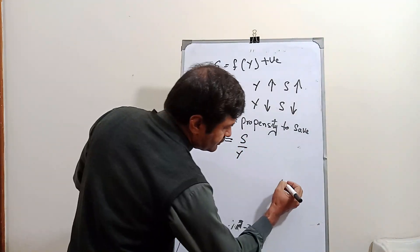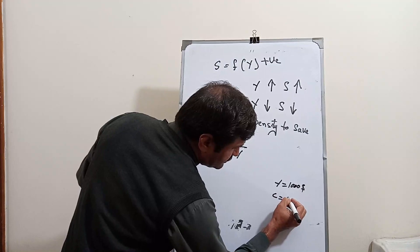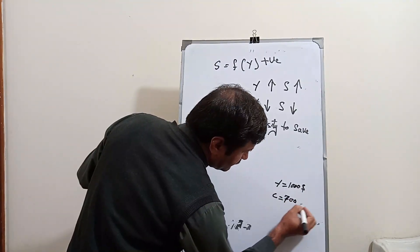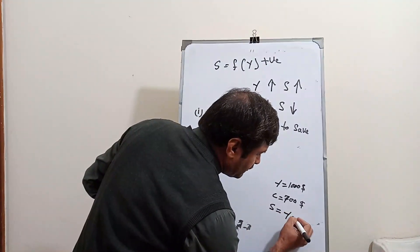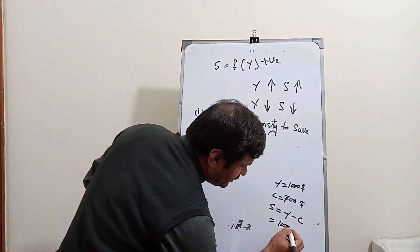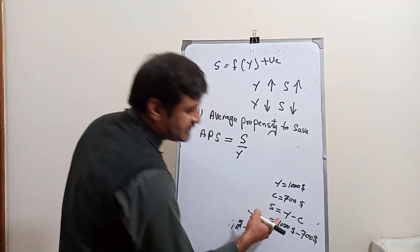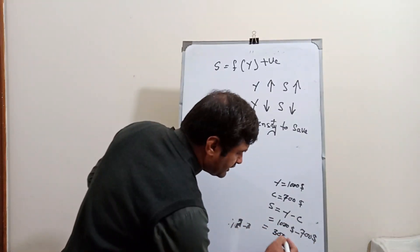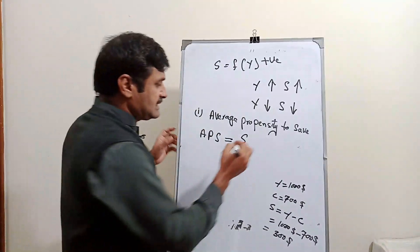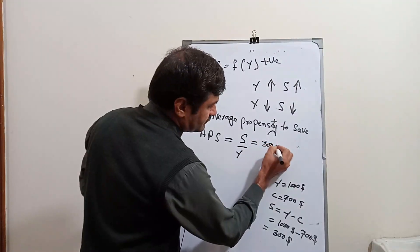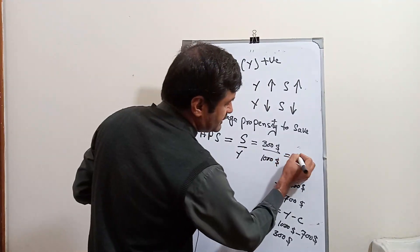Suppose that our income is equal to $1,000 and consumption is equal to $700. Then saving equals income minus consumption: $1,000 minus $700 equals $300. Now putting the values into the formula — saving is $300 and income is $1,000 — so APS = 300 / 1000 = 0.3.